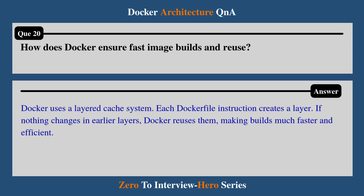Question 20: How does Docker ensure fast image builds and reuse? Docker uses a layered cache system. Each Dockerfile instruction creates a layer. If nothing changes in the earlier layers, Docker reuses them, making builds much faster and more efficient.